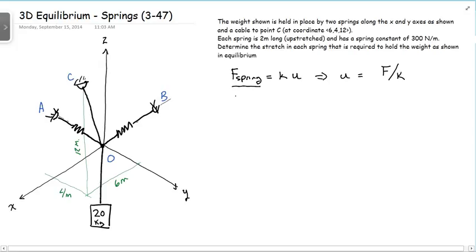So if we look at this carefully, we have the force in spring B is equal to the spring constant of B times the displacement of B.